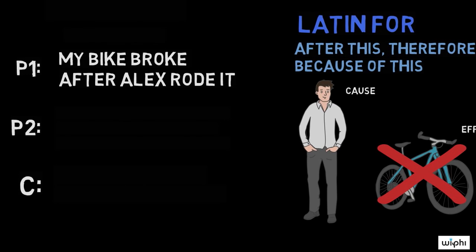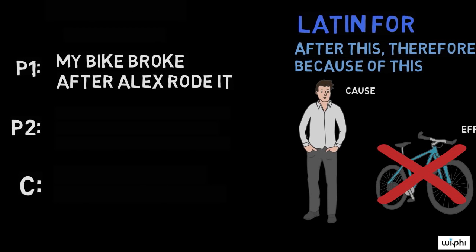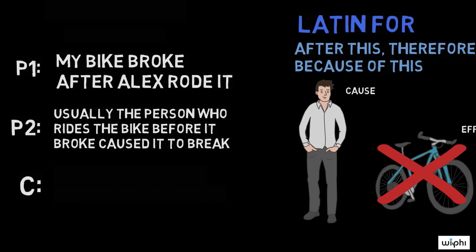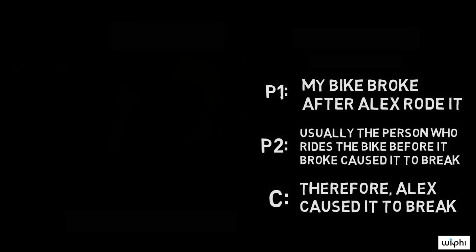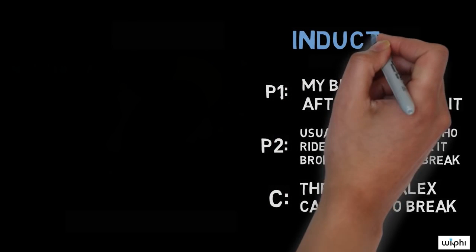Premise 1: My bike broke after Alex rode it. Premise 2: Usually the person who rides the bike before it broke caused it to break. Conclusion: Therefore, Alex caused it to break.